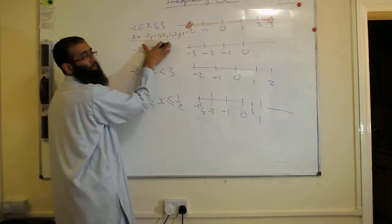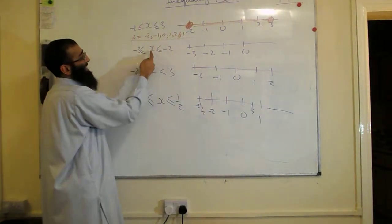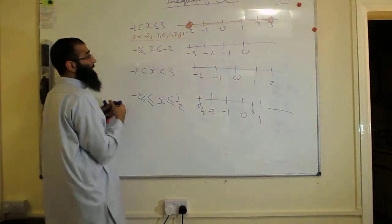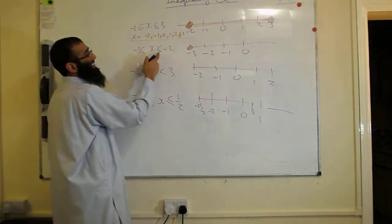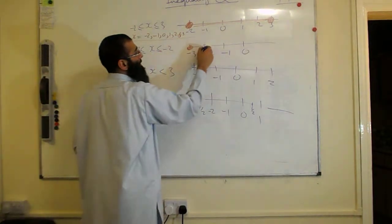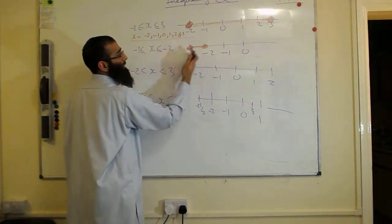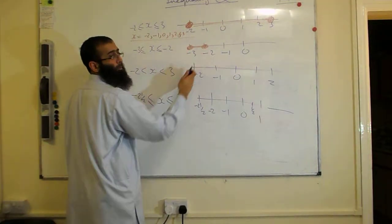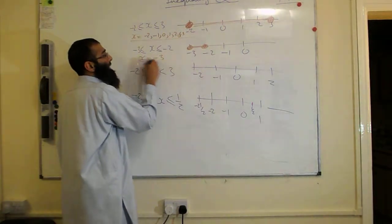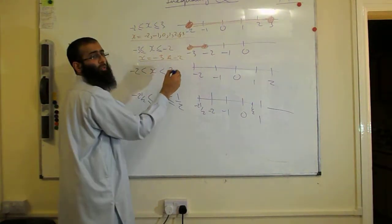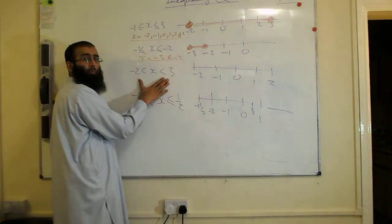If you look at the next one, we have X must be greater than or equal to minus 3, so that's solid. That means that's part of the answer. But X must be less than or equal to minus 2. So the solutions lie between these two numbers. Because we look at integer values, the answer will be X is equal to minus 3 and minus 2. So these are the answers, the integer values there.